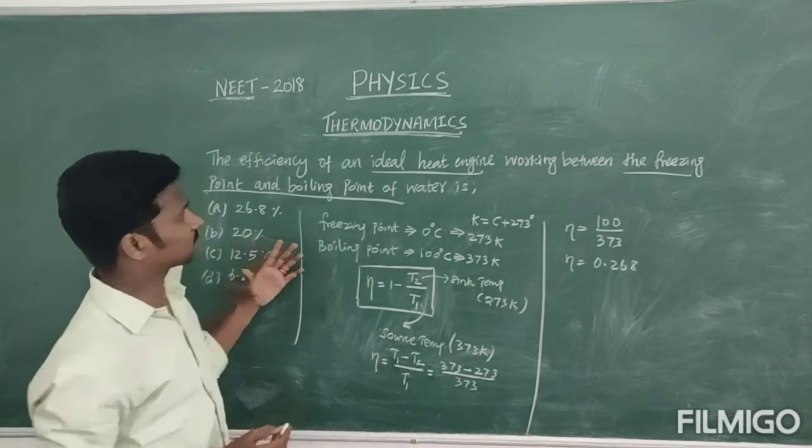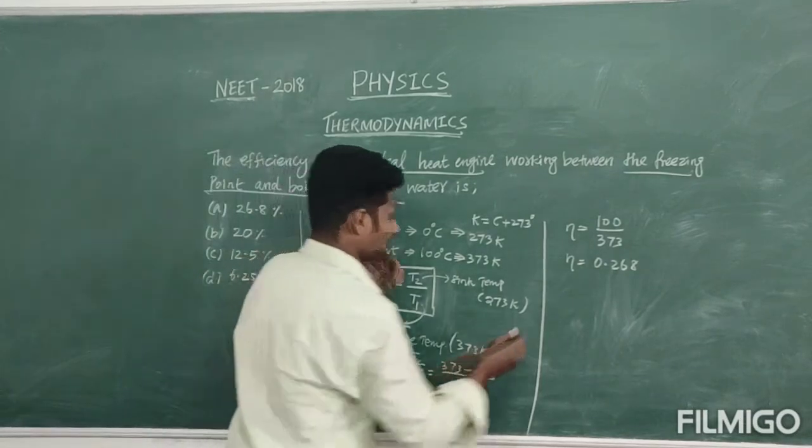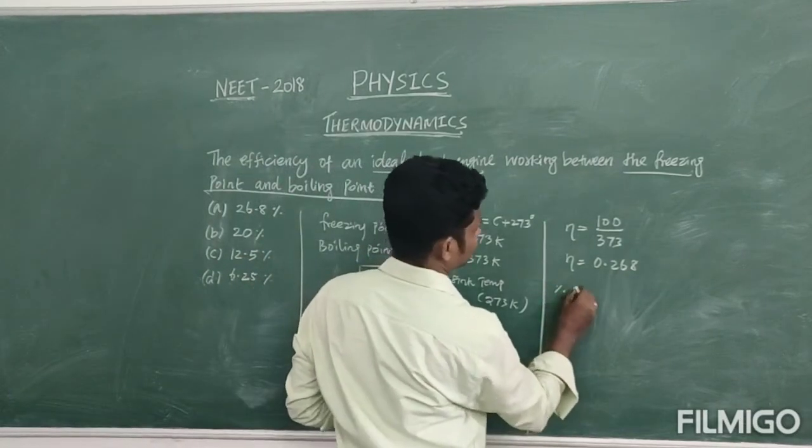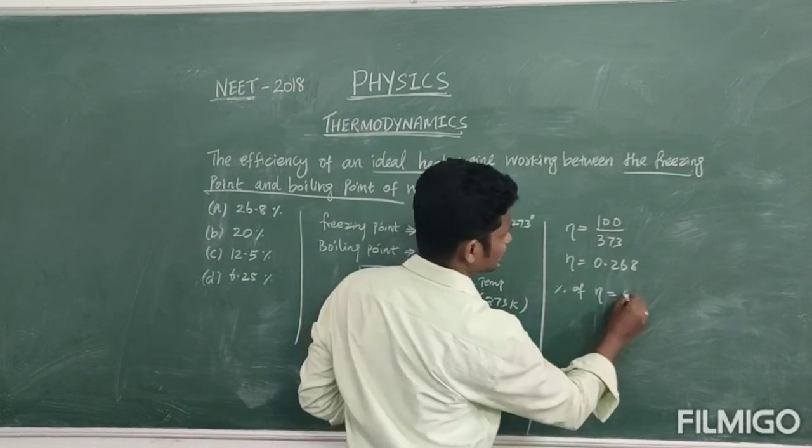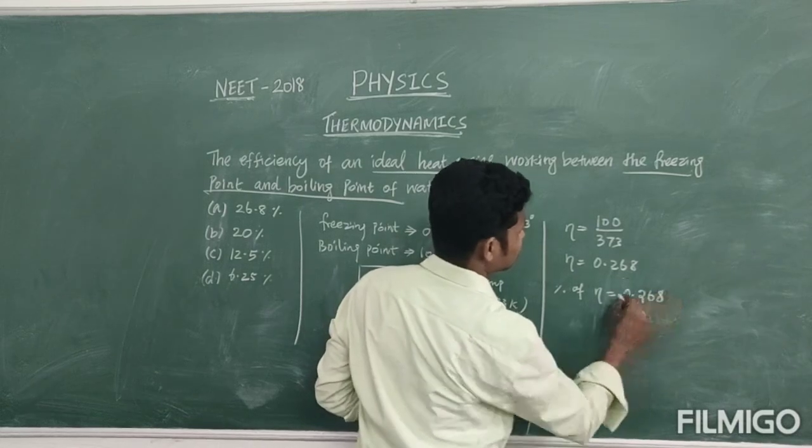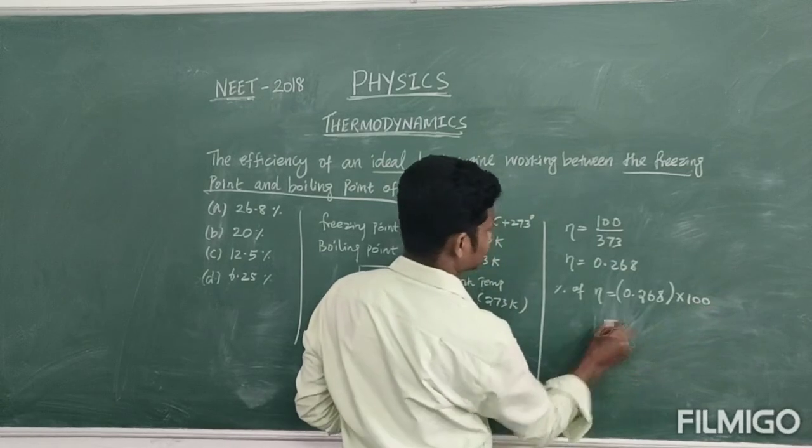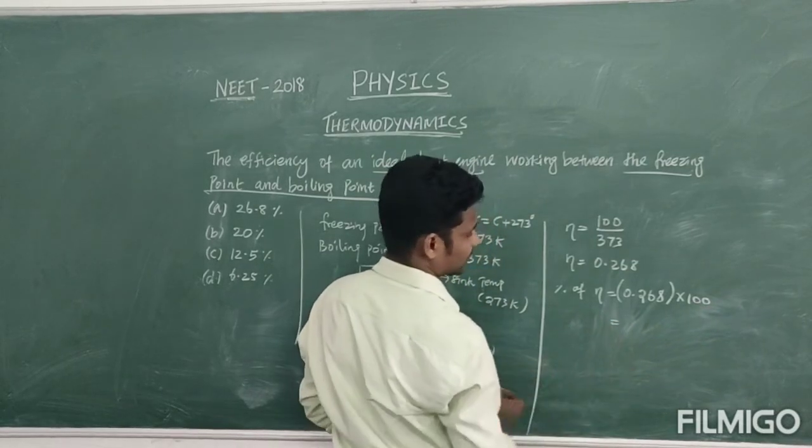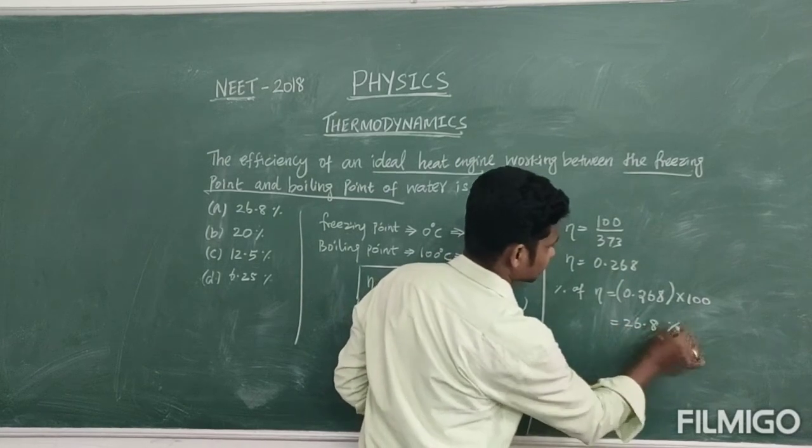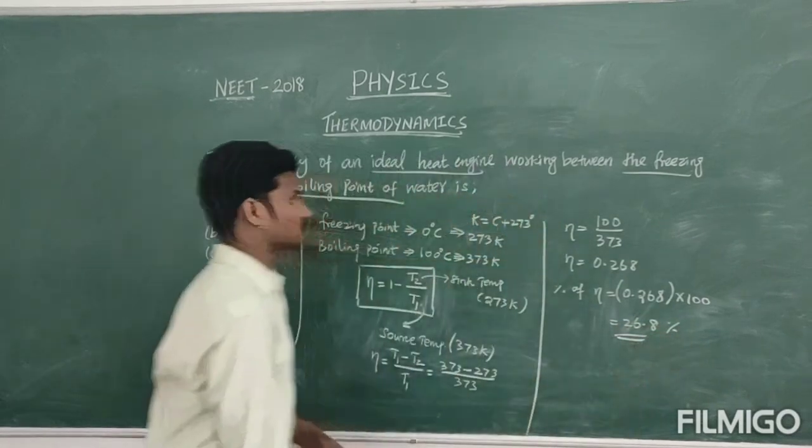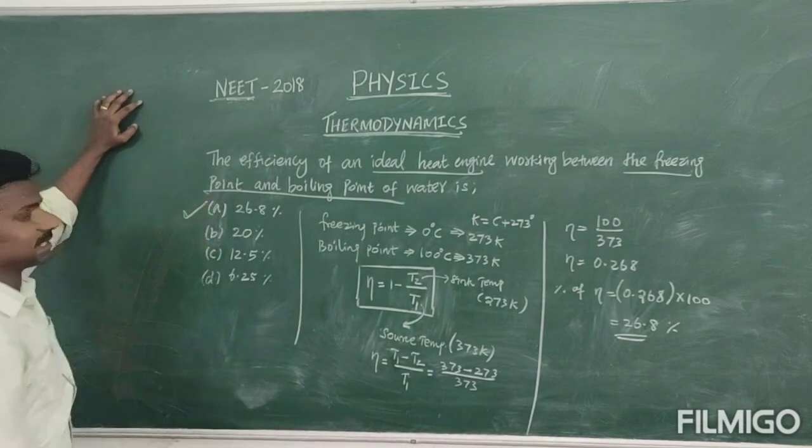But now, if you observe the problem, there are percentage values. So, let's calculate the percentage of the efficiency of the engine. That is equal to 0.268 into 100. So, we can write the percentage of the efficiency, that is 26.8 percentage. So, the correct answer is 26.8 percentage. Thank you.